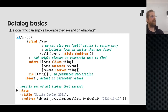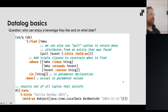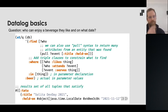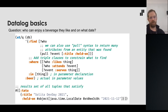Using pull, we can pull `title` and `held-on` from the event, and they appear in the result as a map. The result tuple is Tatu and a map containing the attributes of the Dev Day 2021 event. We can also use pull syntax to recursively pull from nested entities, getting a nested map structure very conveniently.